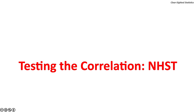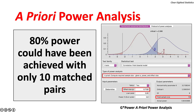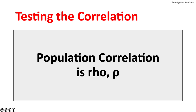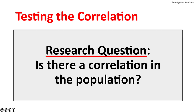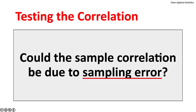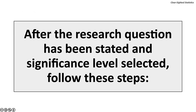Moving to the null hypothesis significance test for the correlation: using the absolute value of the coefficient of correlation, 0.7182, 80 percent statistical power could have been achieved with only 10 matched pairs. The population correlation is symbolized by the Greek letter rho. The research question is: is there a correlation in the population, i.e., is rho not equal to zero? This is a two-tailed test — could the sample correlation be due to sampling error?